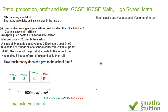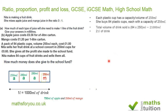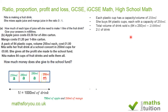Moving on — each plastic cup has a capacity of 250 millilitres, and she buys 84 cups. So the total volume of drink needed is 84 × 250 = 21,000 millilitres, which converts to 21 litres of drink.